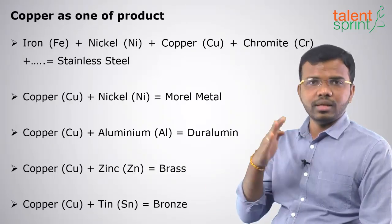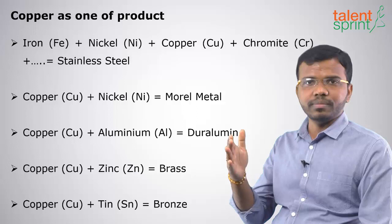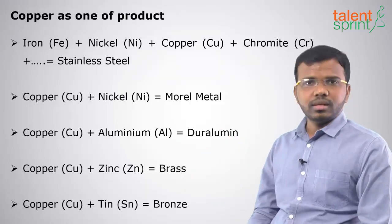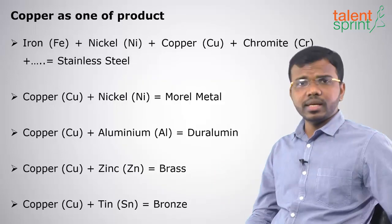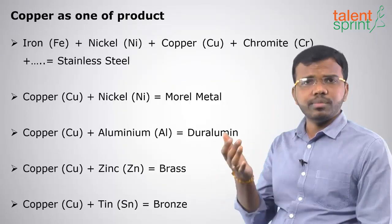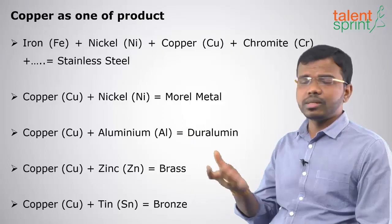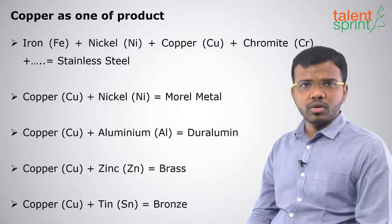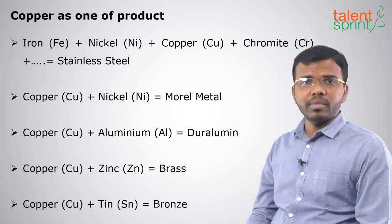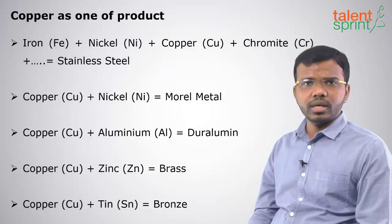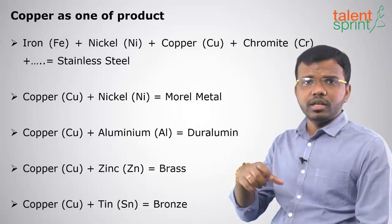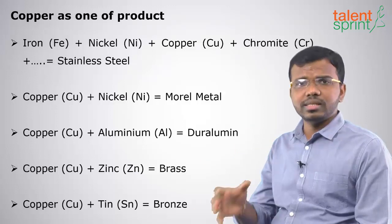Copper is also used in the making of stainless steel, along with iron, nickel, chromium, and chromite. When we mix all these things we get different types of stainless steel. There are different types — austenitic, ferritic, and martensitic stainless steels — with different compositions of iron used in each type.